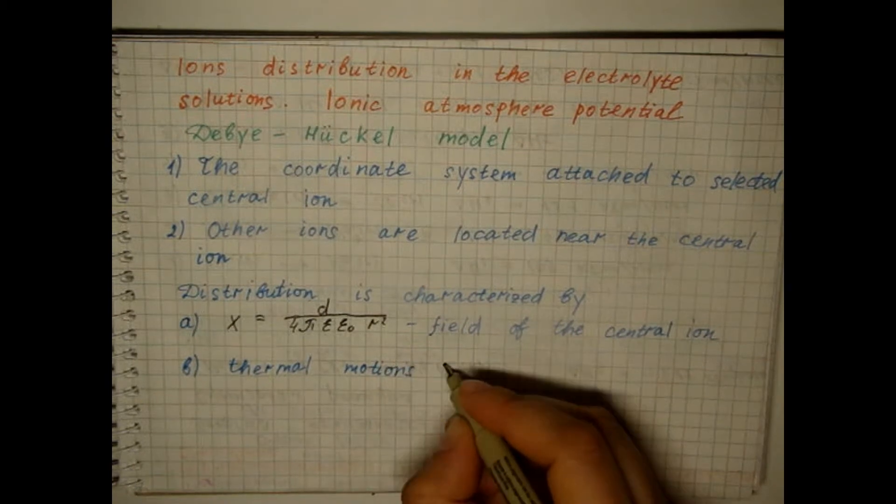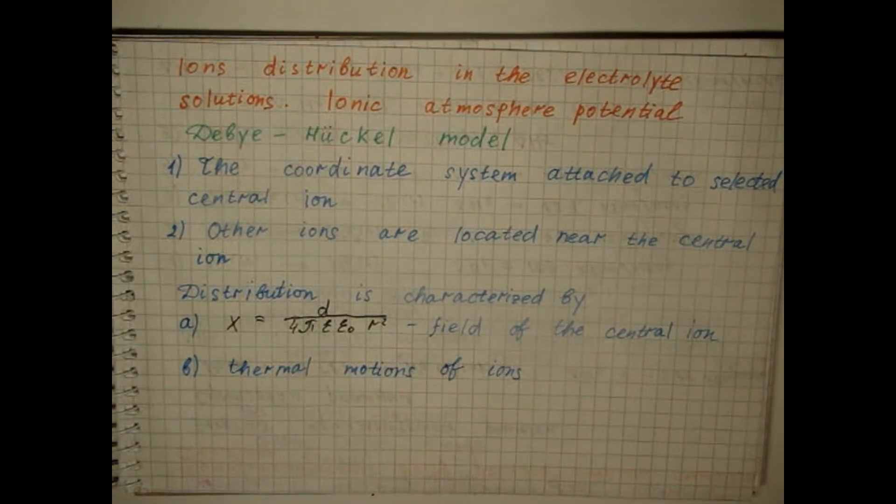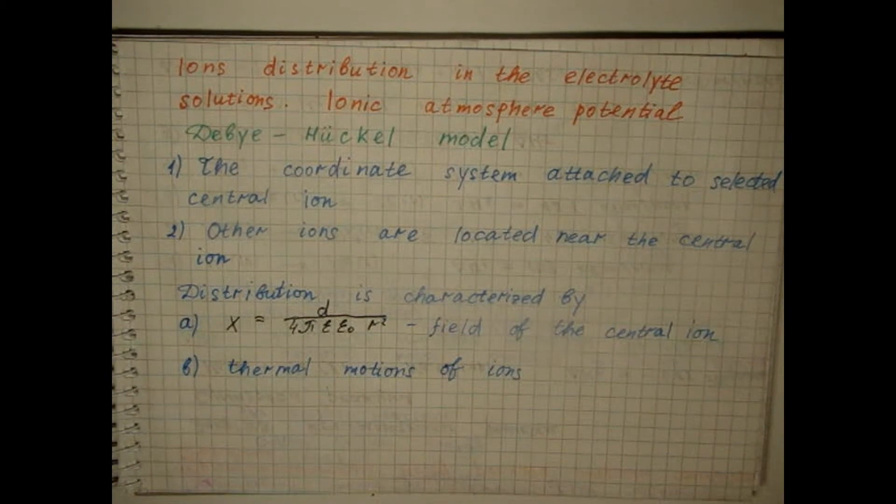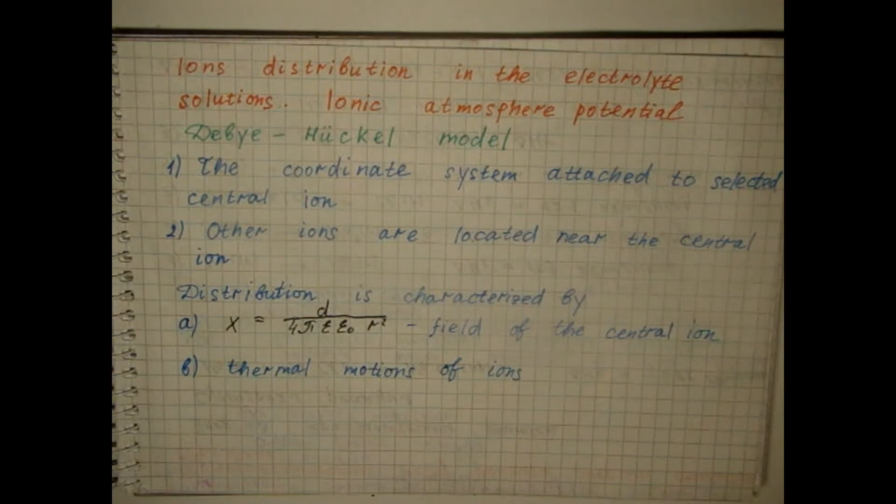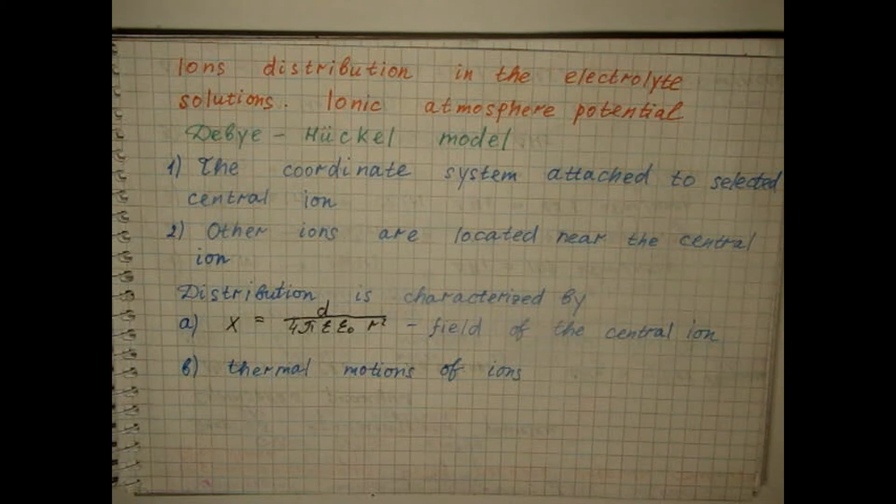Therefore, the closer to the central ion, the greater the probability that there will be an ion of the opposite sign. That is, the distribution will look as follows.